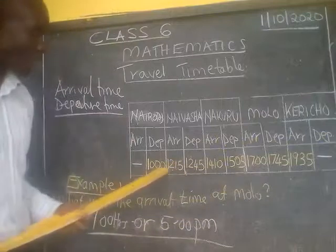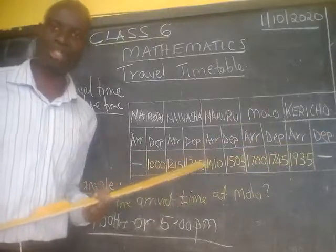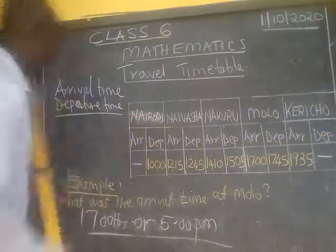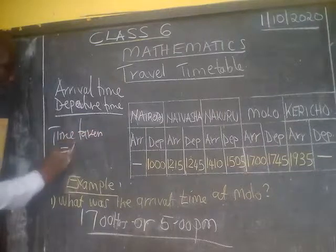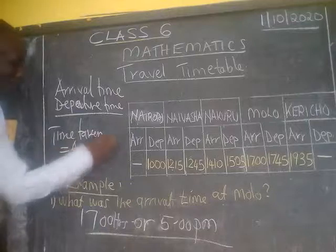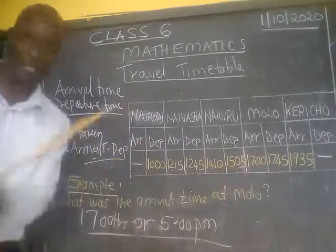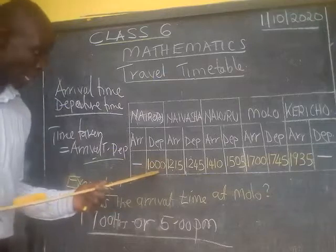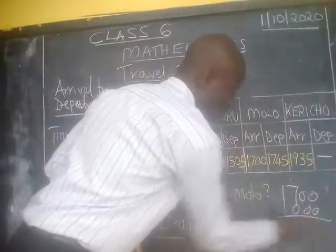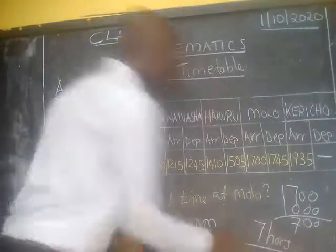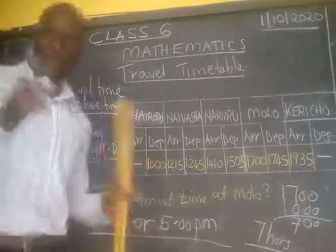You can also be asked how long did this vehicle take from Nairobi to Molo. The formula is: time taken equals arrival time minus departure time. For this example, the vehicle left Nairobi at a departure of 10 hours and arrived at Molo at 17 hours. So we take 17:00 minus 10:00 and we get seven. It took seven hours for this vehicle to travel from Nairobi to Molo.